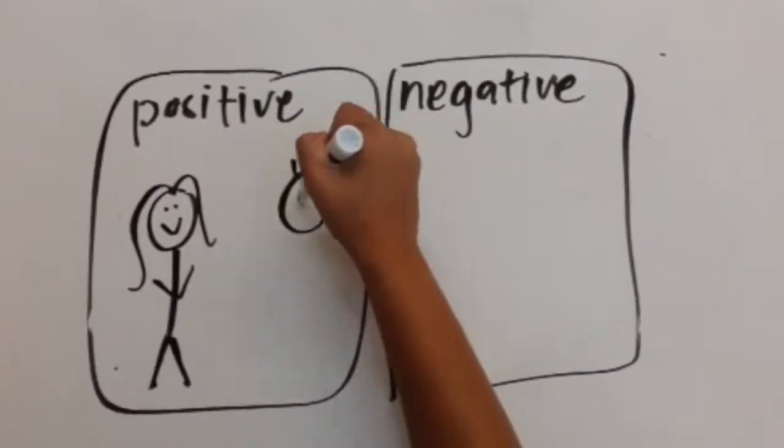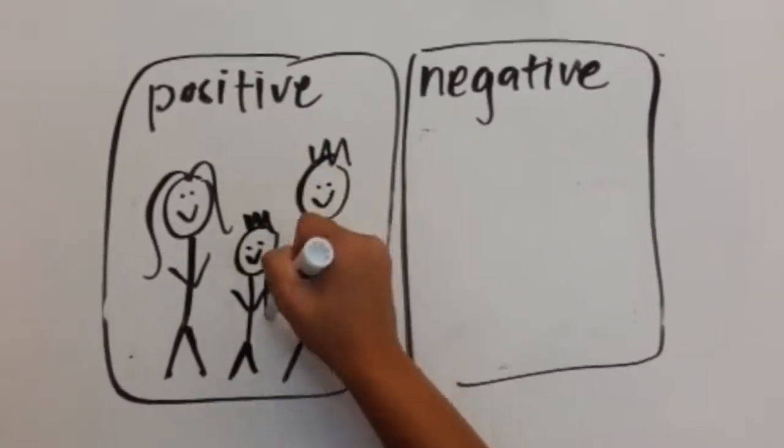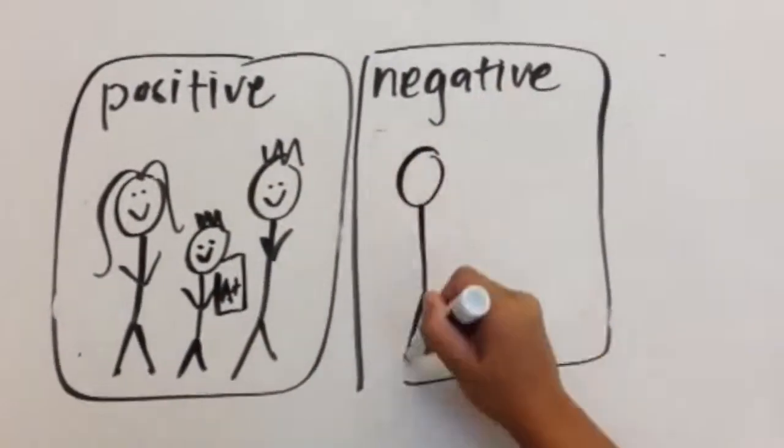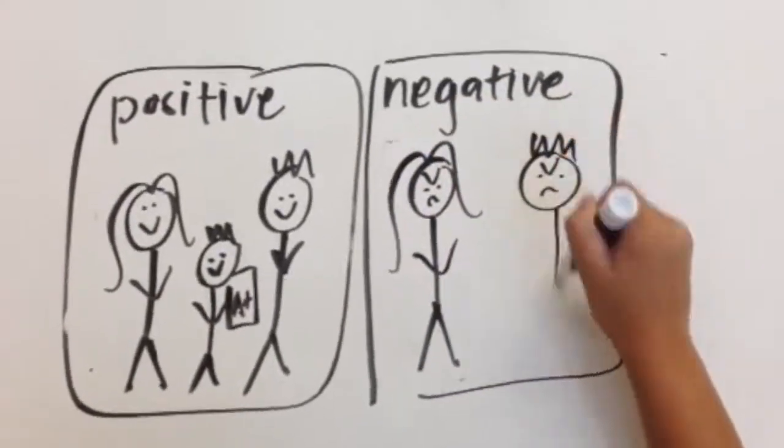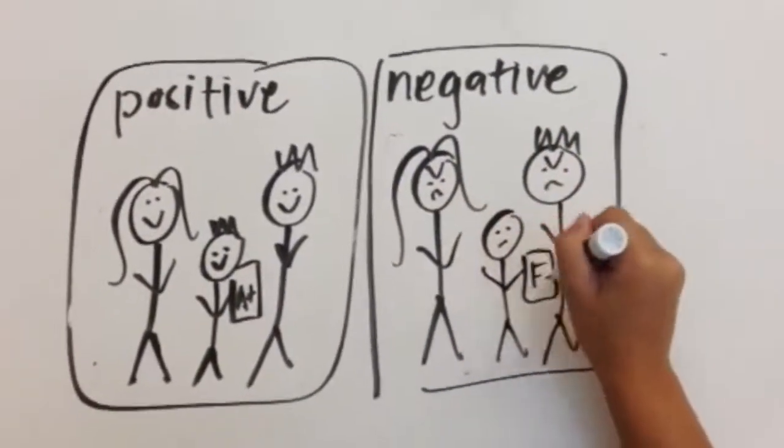Positive: keep privileges when obeying and always listening to your parents. Negative: if you disobey your parents, you lose your privileges.